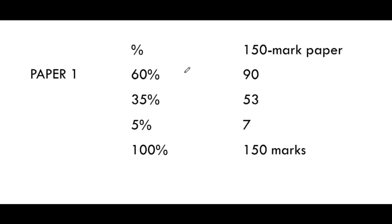Paper one is out of 150. Of that, 60% is going to come from finance, 35% from data handling, and 5% from probability.